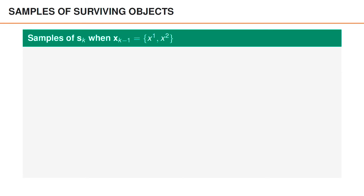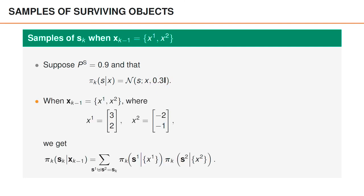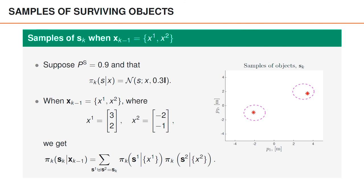Let us look at samples of the set of surviving objects when there are two objects x1 and x2 at time k-1. In this example, the single object surviving model is such that the probability of surviving is 0.9. If an object survives, its new state is the previous state plus Gaussian noise with covariance 0.3 times the identity matrix. We assume that the states are two-dimensional, and the states at time k-1 are 3,2 and another location. Looking at samples from the surviving objects, we can see that they usually survive and the new state ends up in one of the two dashed circles centered around 3,2 or the second location. Even though the objects are independent, they are not identically distributed, and among the samples observed, we never get two objects in the same circle.